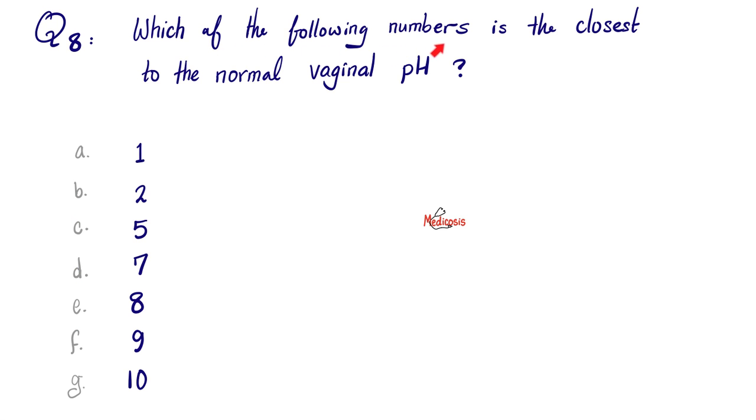Question 8. Which of the following numbers is the closest to the normal vaginal pH? Let's think about that. You know that the sperm lives in an alkaline fluid made by the prostate gland. You know why? So that it can survive in the acidity of the vaginal canal. And why is the vaginal canal acidic? To protect the vaginal canal from bacteria and other organisms.